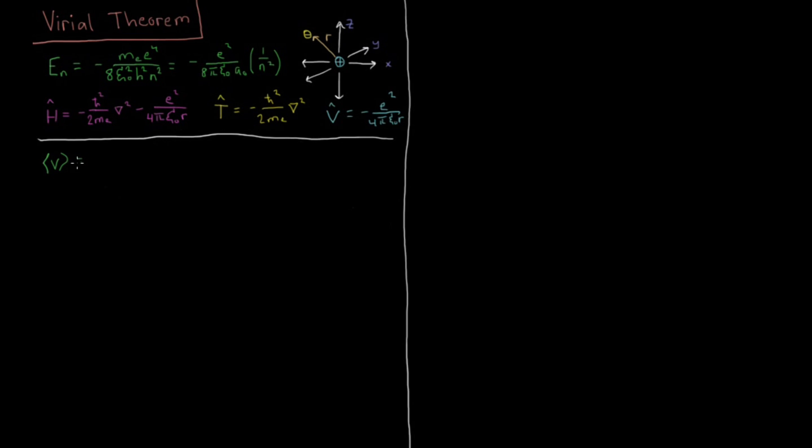So this is going to be our standard expectation value formula in spherical polar coordinates, which is going to be integral from 0 to infinity, r squared dr, integral from 0 to pi sine theta d theta, integral from 0 to 2 pi of d phi, then psi star of nlm, whichever psi star we want, times the operator for potential energy, the minus e squared over 4 pi epsilon naught r, the Coulomb potential, acting on the wave function psi nlm.